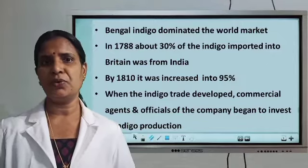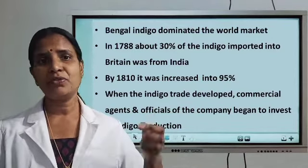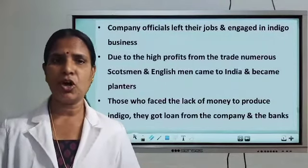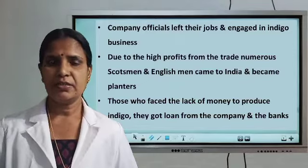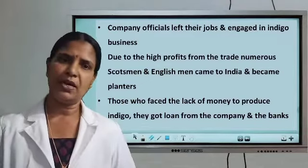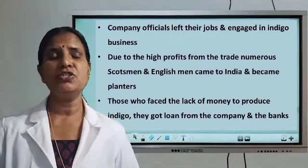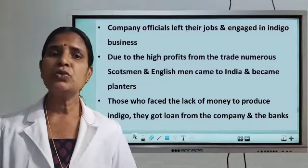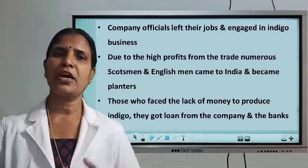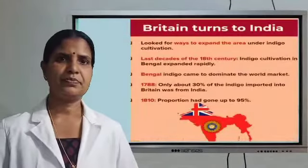By producing this indigo, East India Company officials and agents got more and more profit, so they started to invest more and more money in indigo cultivation. Many officials left their jobs and became planters. Many people from Scotland and England came to India and became indigo planters. Those who did not have money to do the cultivation got loans from the East India Company and the banks started at that time, thereby increasing cultivation in India.